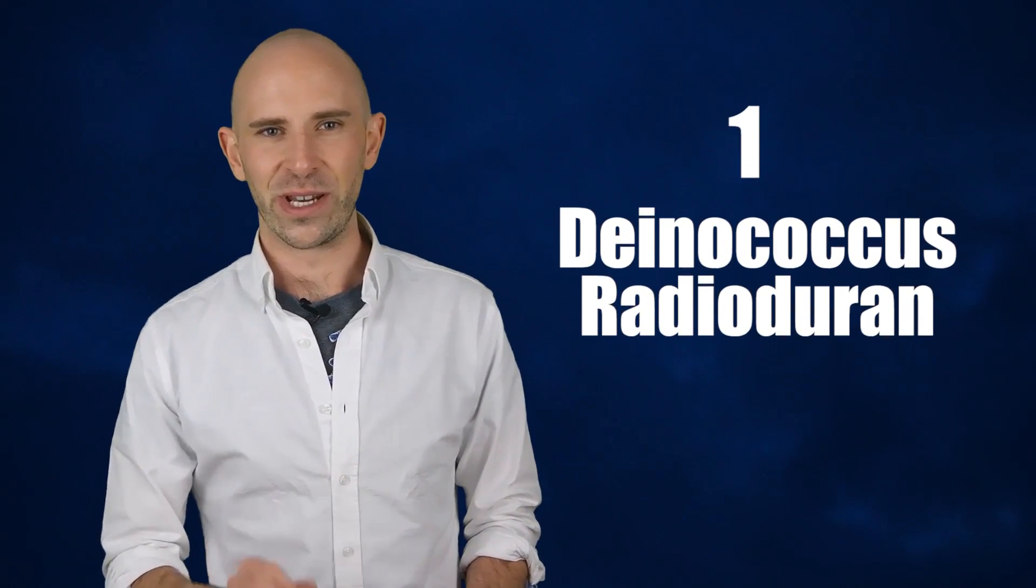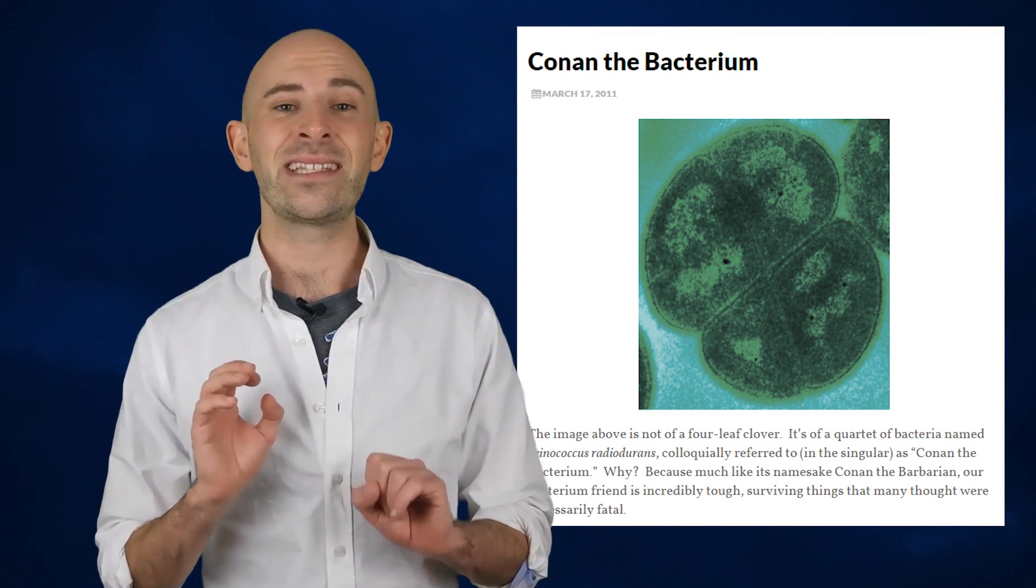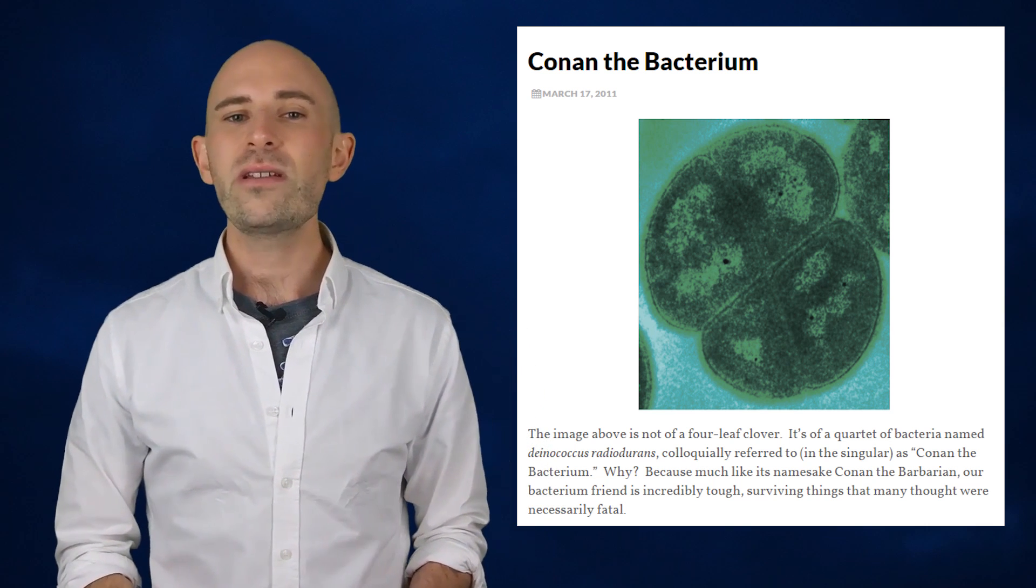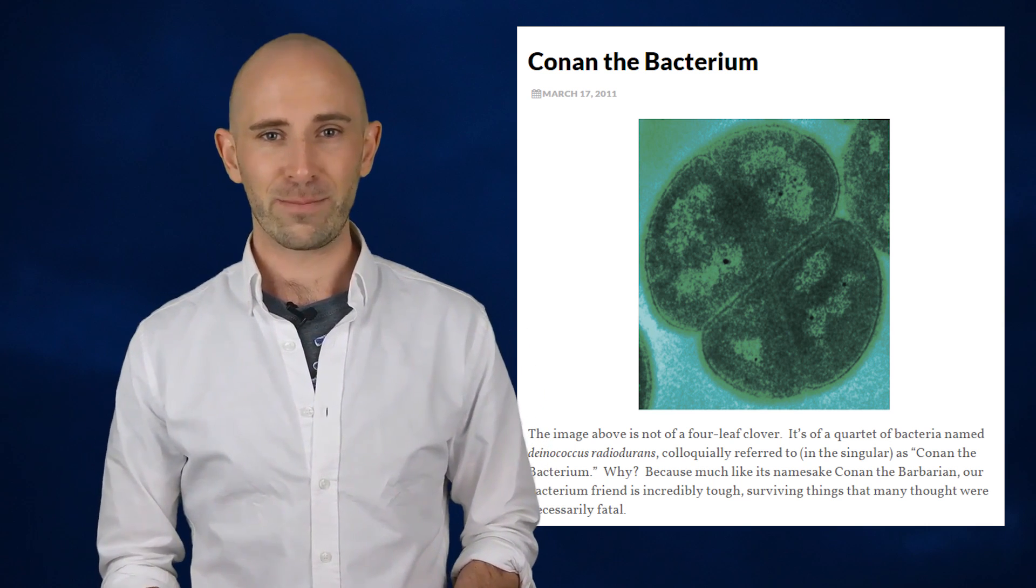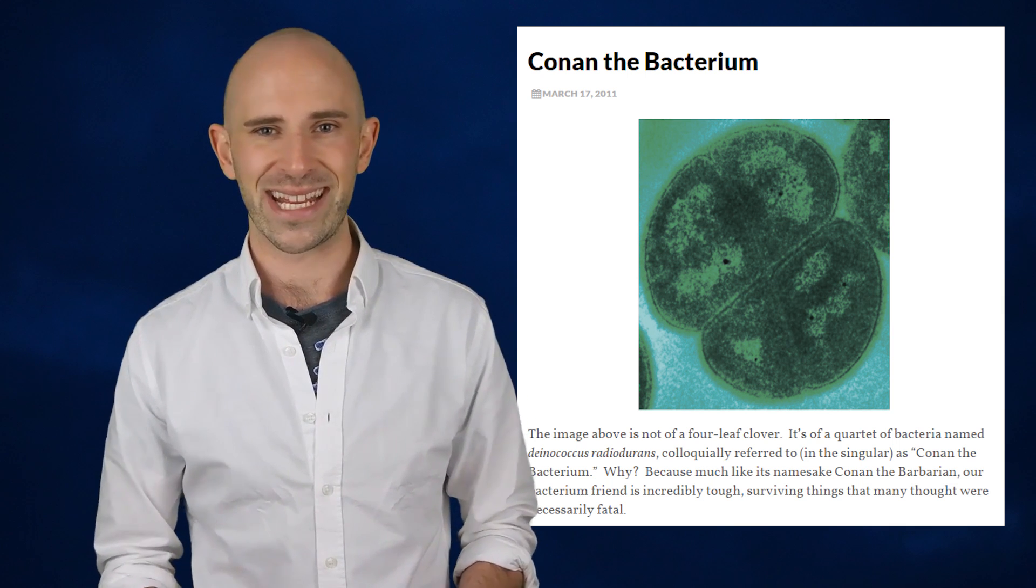1. Deinococcus radiodurans. Nicknamed Conan the Bacterium by scientists, this is the undoubted survivor. Tardigrades may be extremophiles, but Conan is a poly-extremophile, meaning it is just generally better at everything than the already indestructible tardigrade. Listed as the most radiation-resistant form of life by the Guinness Book of World Records at one point, it is clear that this is one tough cookie. It is able to repair damaged DNA so quickly that scientists are trying to use it for help in treating humans.